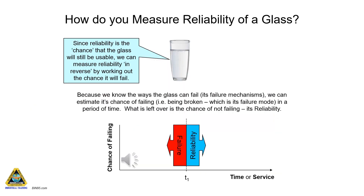How do you measure reliability of a glass? Since reliability is the chance that the glass will still be usable, we can measure reliability in reverse by working out the chance it will fail. Because we know the ways the glass can fail — its failure mechanisms — we can estimate its chance of failing in a period of time, with breaking being a failure mode. What is left over is the chance of not failing, which is its reliability.